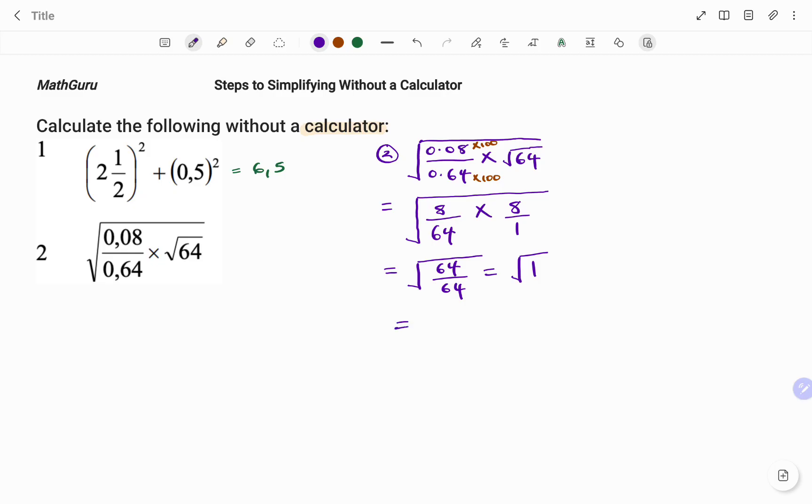And 64 divided by 64, that's square root of 1. And square root of 1 is 1. So therefore, for the second question, the answer is 1.